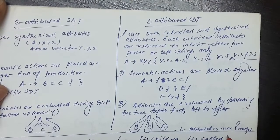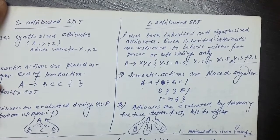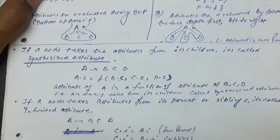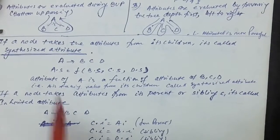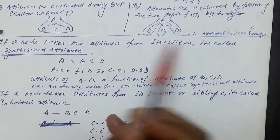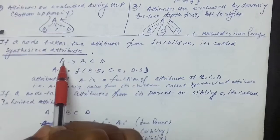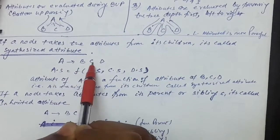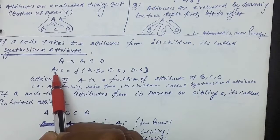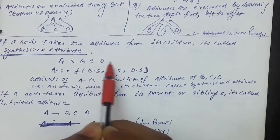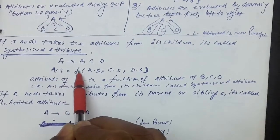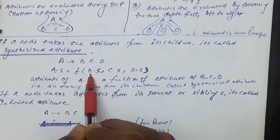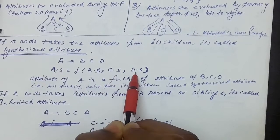The L-attributed SDT is more powerful than the S-attributed SDT. In the synthesized attribute, if a node takes the attribute from its children, it is called the synthesized attribute. For example, A produces BCD, and the attribute of A is set as a function of the attributes of B, C, and D: A.S = f(B.S, C.S, D.S).